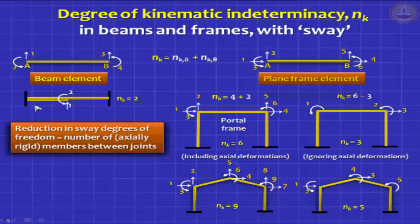So the degree of kinematic indeterminacy here, which you can split into unknown translation n_k_delta and unknown rotation n_k_theta, it is 1 plus 1. It is 2 here.